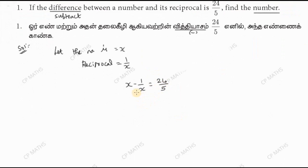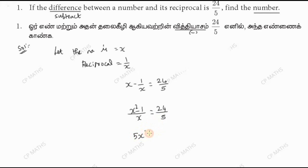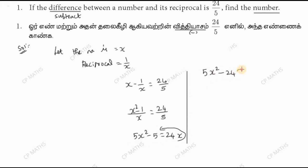Cross multiply: x squared minus 1 divided by x equals 24 by 5. Cross multiplying gives 5x squared minus 5 equals 24x, which rearranges to 5x squared minus 24x minus 5 equals 0.